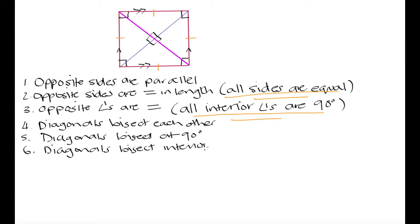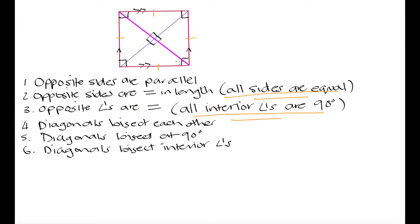The proof of the diagonals bisecting the interior angles is in our previous video. Since our square has all interior angles at 90 degrees, each of these diagonals is going to turn this 90 degree angle into two 45 degree angles. So when we have our diagonals in, each corner becomes 45 degrees, since it is bisecting a 90 degree angle.